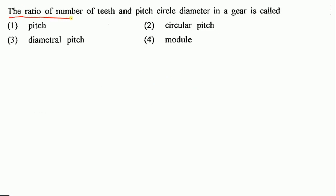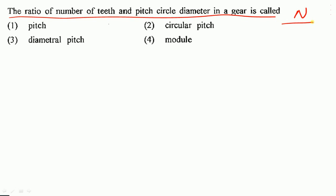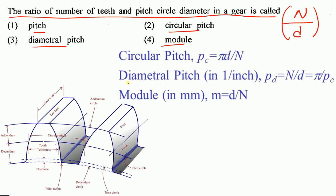The ratio of number of teeth to pitch circle diameter in a gear is called: circular pitch, pitch, diametral pitch, or module? The ratio of number of teeth divided by pitch circle diameter is called diametral pitch. So option 3 — diametral pitch — is the correct option.